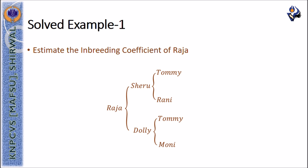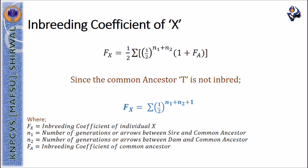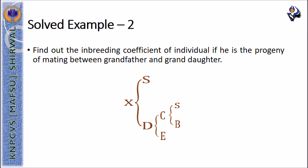We will now see with the help of a solved example how to estimate the inbreeding coefficient of an inbred individual. Taking the pedigree of Raja again, this pedigree is converted into an arrow-style pedigree diagram. The inbreeding coefficient of Raja is calculated using the formula: summation of (1/2) raised to n1 plus n2 plus 1. Since the common ancestor T is not inbred, FA equals 0. The result is 0.125, meaning Raja contains 12.5% homozygous genes that are identical by descent.